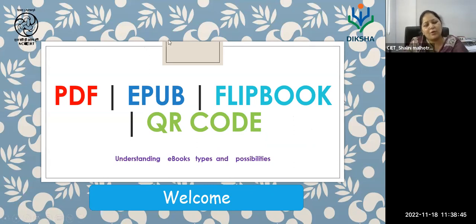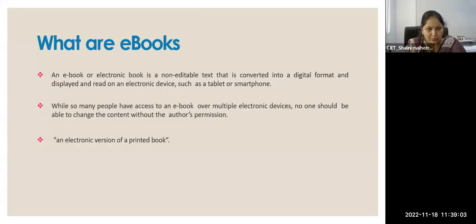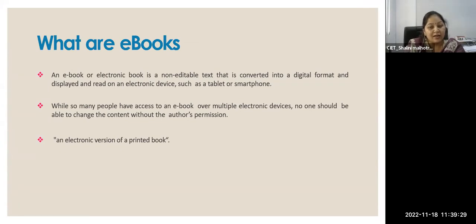So today's session, we'll be studying about different types of ebooks — like PDFs, EPUBs, and flipbooks. And there will be something about QR codes also. I like to answer all the questions, but I will do that after the session. So first we'll start with the ebooks. What is happening today — we have all become digital, everything is going digital, and so has education. Now when education is digital, we need digital books also. These digital books are electronic books, which we generally call ebooks.